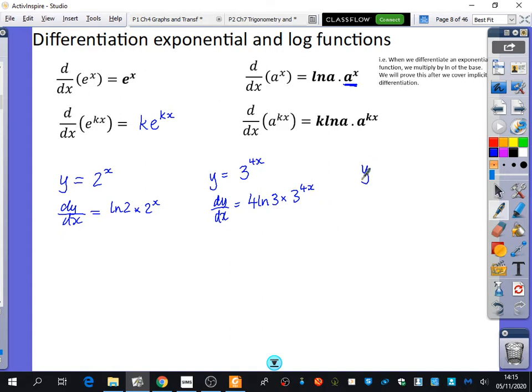And if I had e to the x, well, we know what e to the x differentiates to, but e to the x is actually a special case of this one that I've got here. It would be ln e times by e to the x. But ln e is equal to 1. So you just get that dy by dx is equal to e to the x.